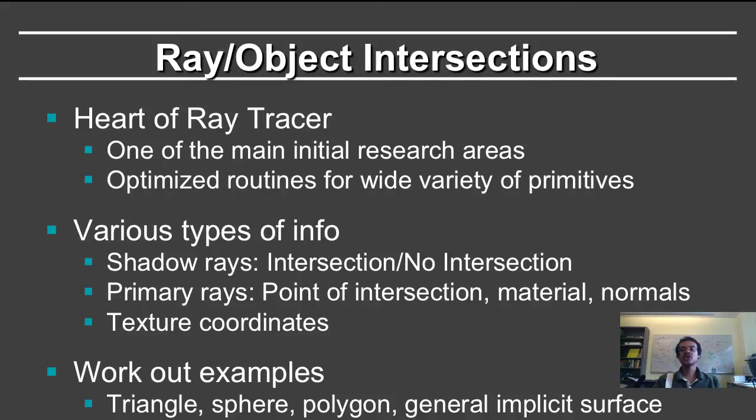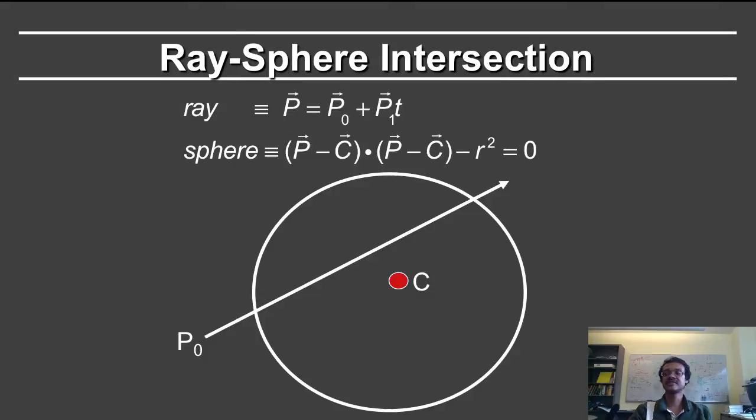In this segment, we will try to work out examples for a triangle, for a sphere, and talk about polygons and general implicit surfaces.